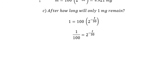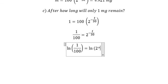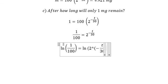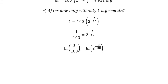Next we put ln on both sides. We have the formula here: ln of a to the power of b equals b ln a.